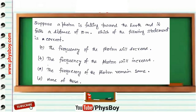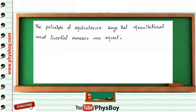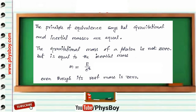The principle of equivalence says that gravitational and inertial masses are equal. Does a photon have a non-zero gravitational mass? The answer is yes — the gravitational mass of a photon is not zero but is equal to the inertial mass: M = E/c², where E = hν, so M = hν/c². The rest mass of the photon is zero, but the gravitational mass is non-zero.